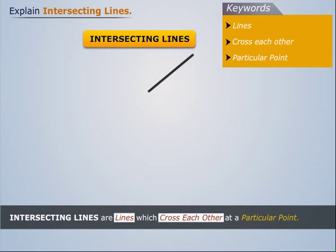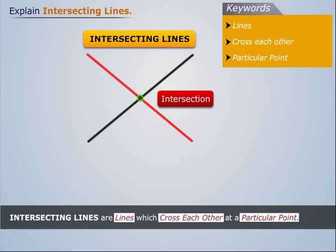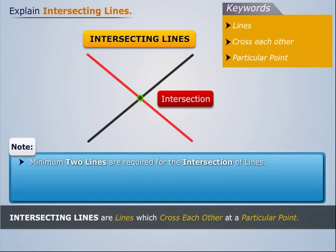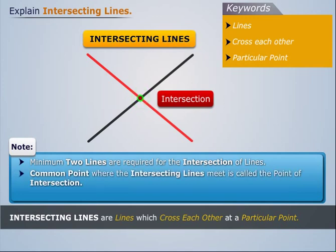Lines which cross each other at a particular point are called intersecting lines. Note that a minimum of two lines are required for the intersection of lines. The common point where the intersecting lines meet is called the point of intersection.